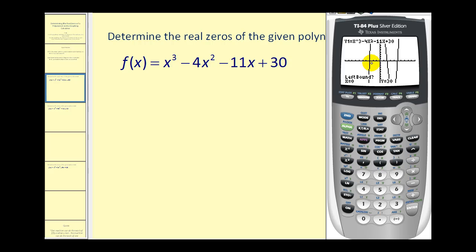The calculator can only find one zero at a time. Let's find the zero on the left first. Right now the cursor is at the point zero thirty, so it's way off the screen. The calculator is asking for the left bound, so we need to move the cursor until it's left of this point. Let's press the left arrow until we see the cursor come into view.